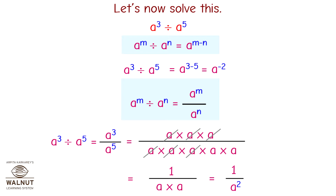Now you can see that we are doing the division using two different laws and we get two different answers where the LHS is the same. So we can say that a raised to minus 2 is equal to 1 upon a raised to 2.